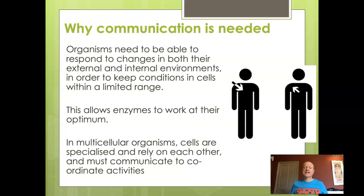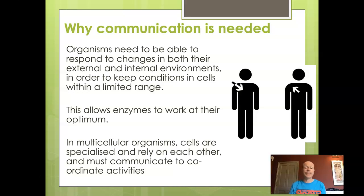Why is there a need for communication? Enzymes need to be working at their optimum — the internal conditions can only cope with a very limited range. So there must be an optimal temperature, optimal pH, and optimal concentrations of different substances like sodium ions, potassium ions, and carbon dioxide. All of these need to be kept at their optimum, or at low enough levels so that they're not toxic — for example, substances like carbon dioxide can build up.